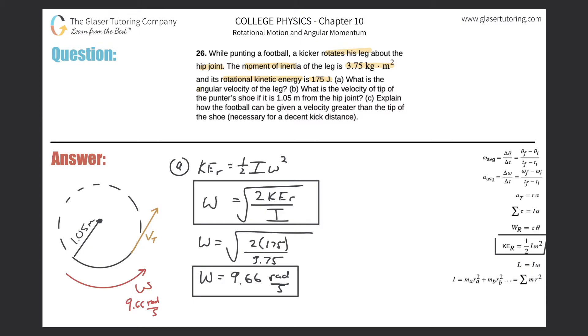How about letter B? What is the velocity of the tip of the punter's shoe if it is 1.05 meters from the hip joint? They're asking us for the velocity of the punter's shoe right at the tip.